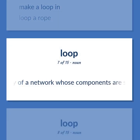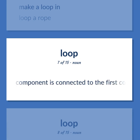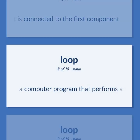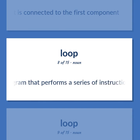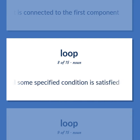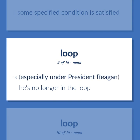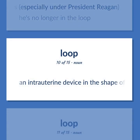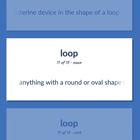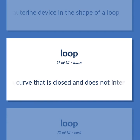The topology of a network whose components are serially connected such that the last component is connected to the first component. A computer program that performs a series of instructions repeatedly until some specified condition is satisfied. An inner circle of advisors, especially under President Reagan — 'He's no longer in the loop.' An intrauterine device in the shape of a loop. Anything with a round or oval shape, formed by a curve that is closed and does not intersect itself.